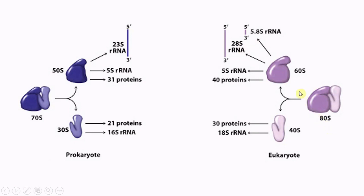In eukaryotes we have 80S ribosomes, which consist of two subunits: 60S and 40S. The 60S subunit consists of 28S rRNA, 5S rRNA, and 5.8S rRNA — so there are three rRNA types in the larger subunit and about 40 proteins. The smaller subunit consists of 18S rRNA and 30 different proteins. So ribosomes consist mainly of rRNA and proteins.